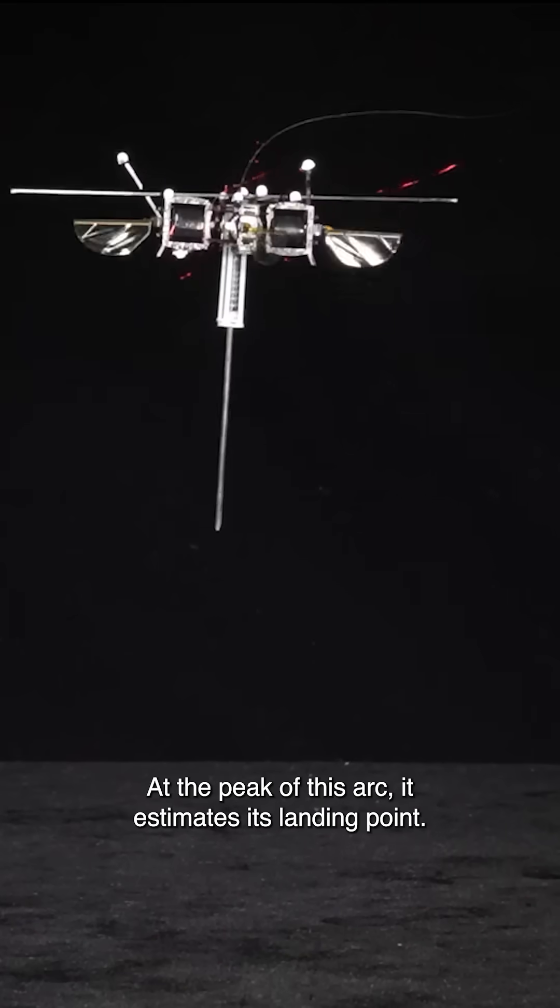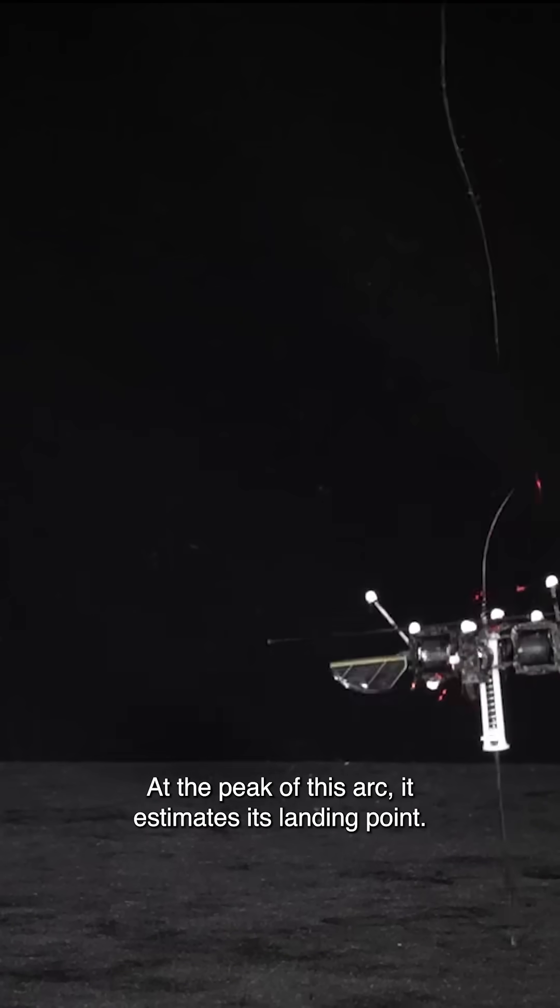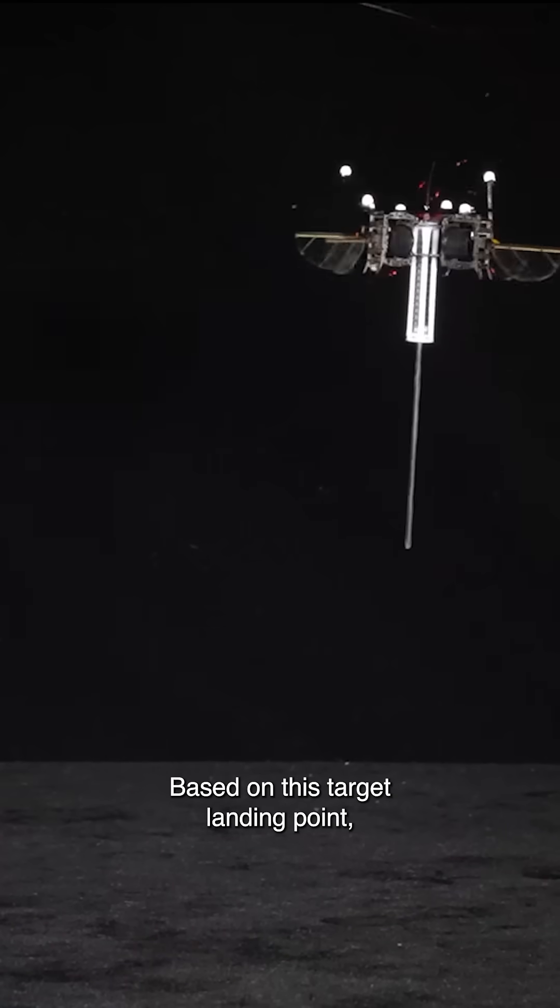As the robot hops, it arcs in the air. At the peak of this arc, it estimates its landing point. Based on this target landing point, the controller calculates the desired takeoff velocity for the next jump.